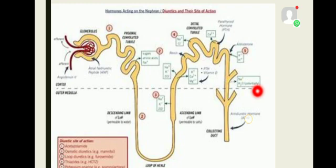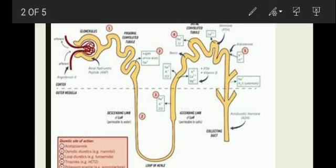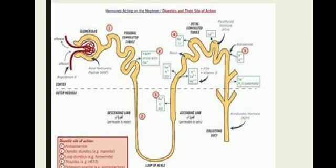The nephron is the structural and functional unit of the kidney, because it filters the blood and converts waste material into urine. It consists of two parts: the first part is called the renal corpuscle or Malpighian corpuscle, and the remaining tubular part is called the renal tubule. Keep in mind that the term 'renal' refers to the kidney.